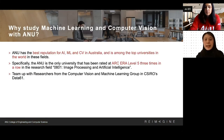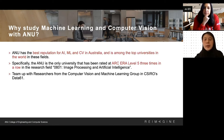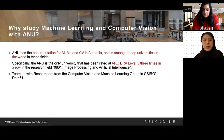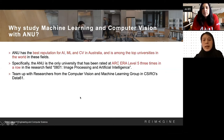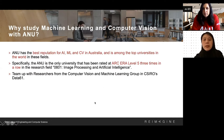I'd like to convince you why you should study machine learning and computer vision with us at ANU. ANU has the best reputation for artificial intelligence, machine learning, and computer vision in Australia, and is among the top universities in the world in these fields. More specifically, ANU is the only university in Australia rated at ARC ERA level five three times in a row in the research field of image processing and artificial intelligence, which also covers computer vision and machine learning.